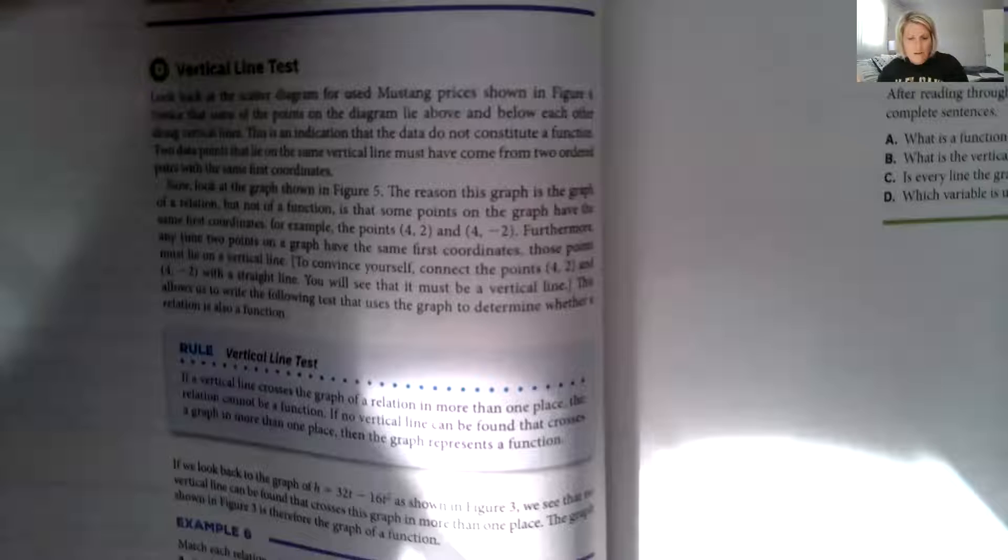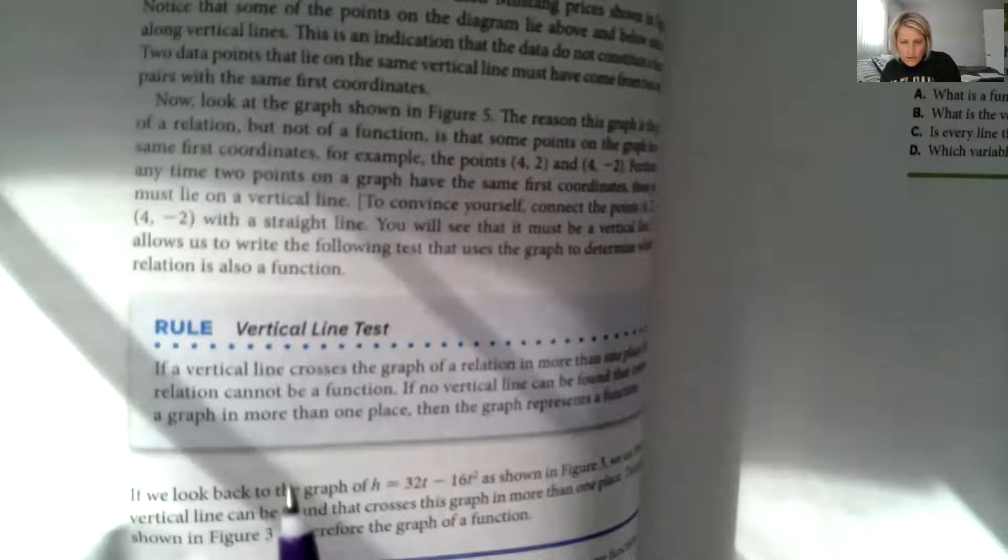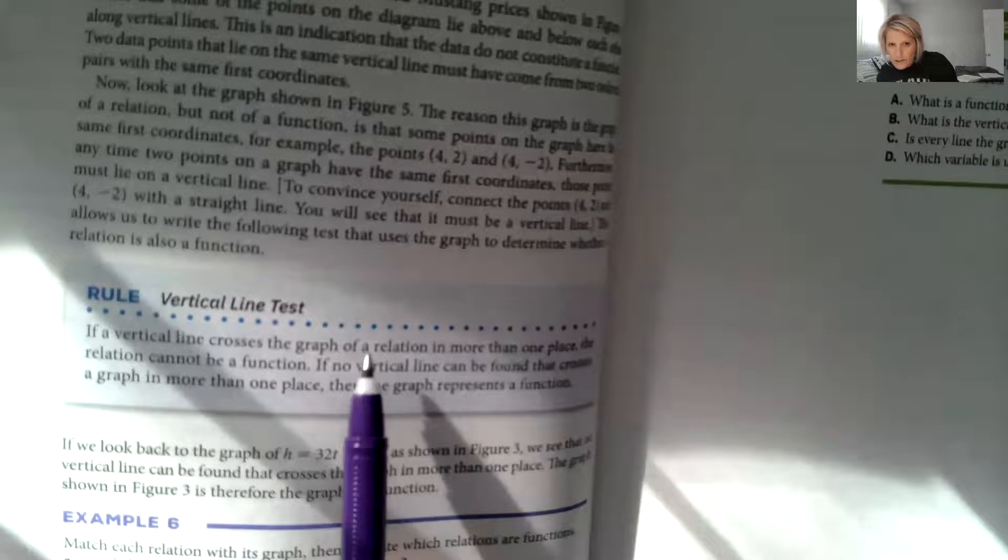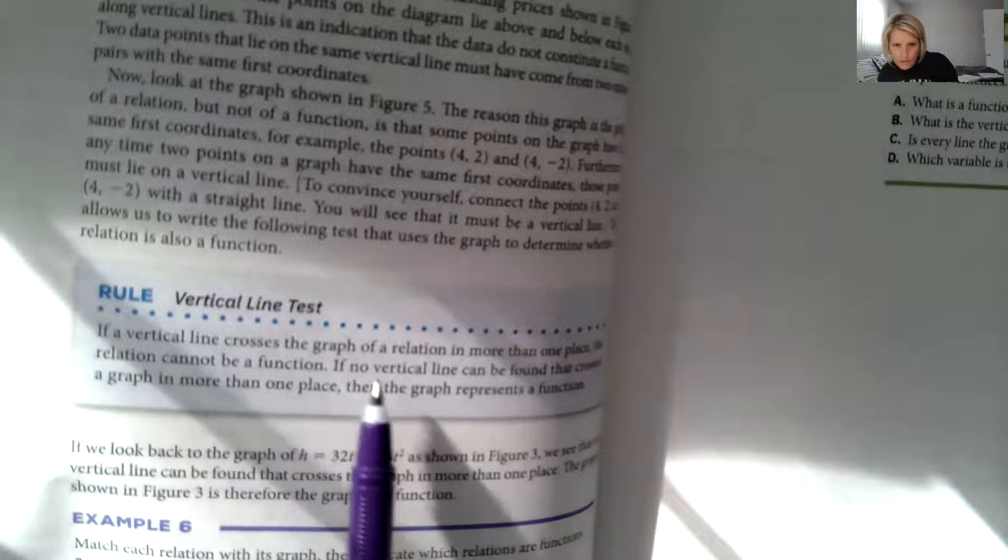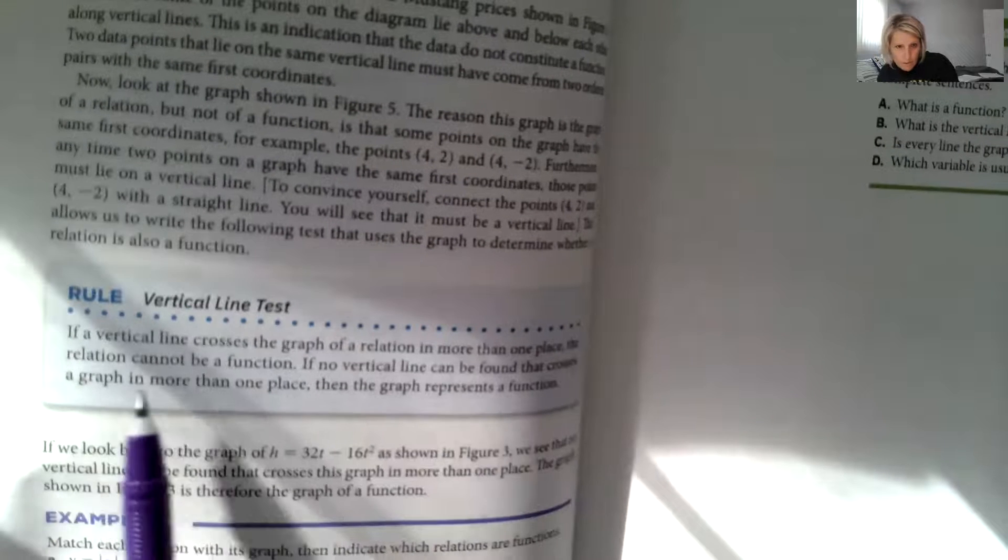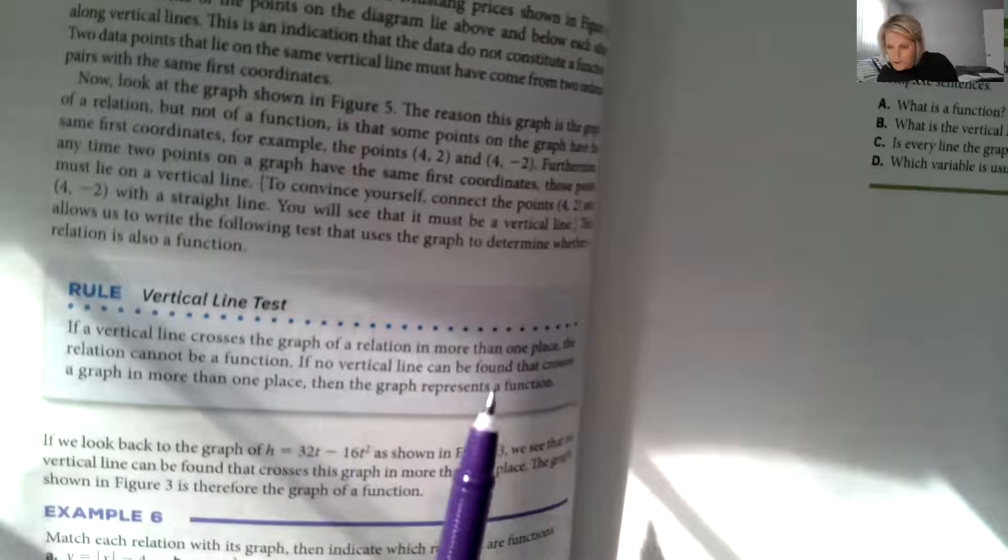It's so nice and sunny out today, but it's hard to read my book. It says if a vertical line crosses a graph of a relation in more than one place, the relation cannot be a function. If no vertical line can be found that crosses a graph in more than one place, then the graph represents a function.